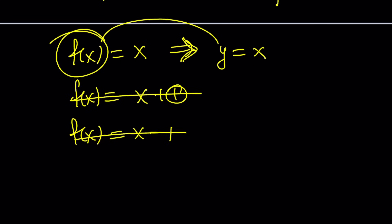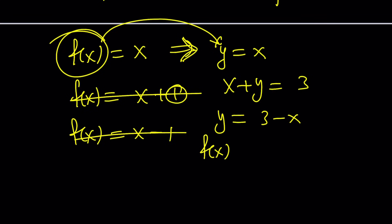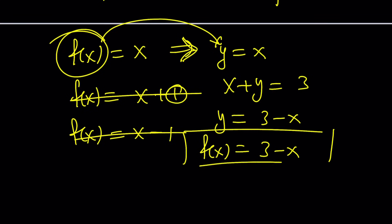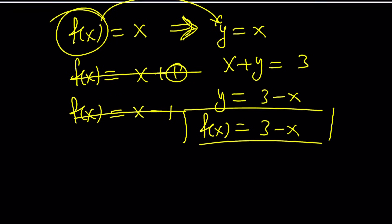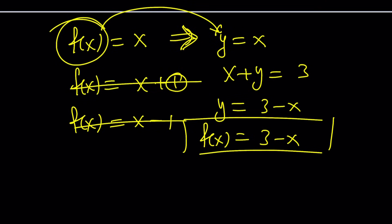y equals x — replace f of x with y. This works because x and y are completely interchangeable. For example, if you write x plus y equals 3, x and y are completely interchangeable. So if you write y as 3 minus x and replace y with f of x, this function is an involution. What happens if you replace 3 with any constant? The answer is yes again — the interchangeability of x and y allows us to do it.